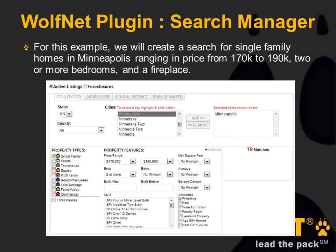In the example shown here, we have selected criteria for a single family home in the city of Minneapolis, ranging in price from $170,000 to $190,000, two or more bedrooms, and a fireplace. All I did was tick the single family box, choose the city of Minneapolis, set the price range of $170,000 to $190,000, choose two or more bedrooms, and check the fireplace. You can see that it updates the number of results it's going to return. This is a pretty manageable number for displaying in a blog post or on a page — it won't overwhelm the person and should look nice in a grid view or list.